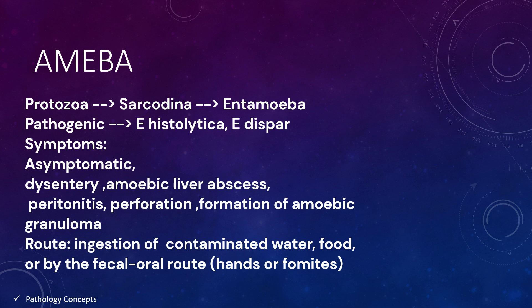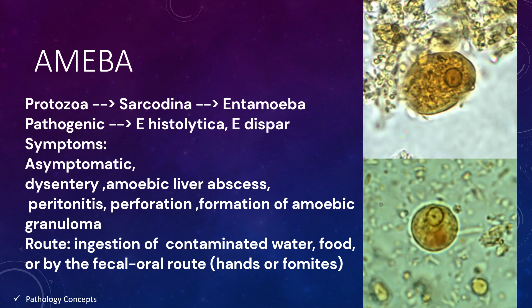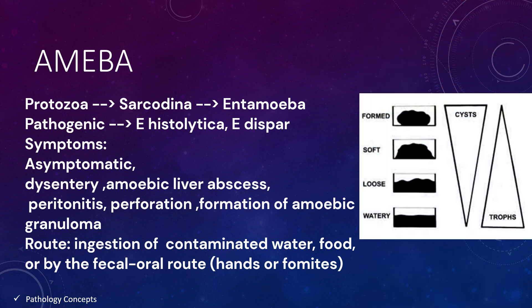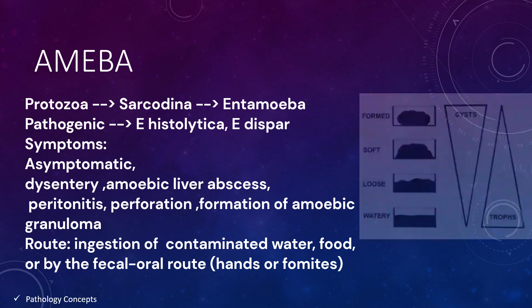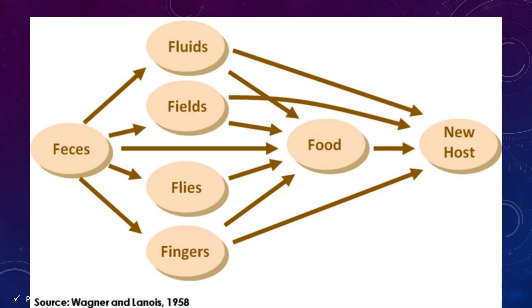E. histolytica and E. dispar cause symptoms such as dysentery, amoebic liver abscess, and other complications like peritonitis, perforation, and formation of amoebic granuloma. The cyst of amoeba is typically found in formed stool, and trophozoites are typically found in diarrheal stool. The route of infection is ingestion of mature cysts from contaminated food, water, and hands.